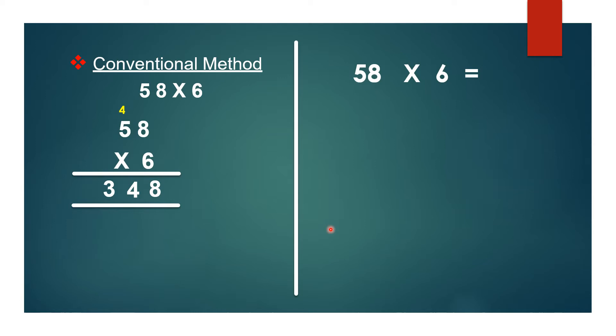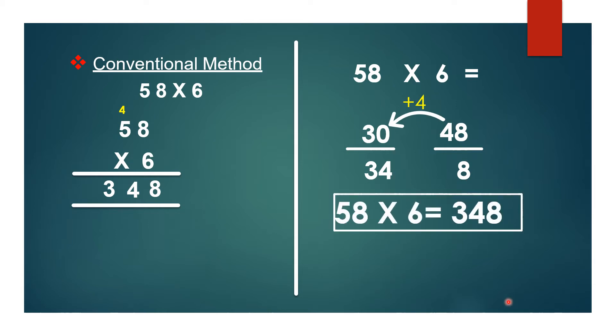Now using this rainbow method we will divide the answer into two parts as it is a two digit number. 6 × 8 = 48, 5 × 6 = 30, directly from multiplication tables. The last step, write only the ones place here, the remaining take as carryover. 30 plus 4 is 34, so 348 is the product.